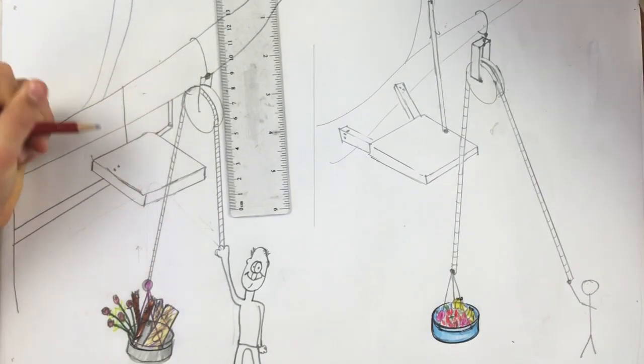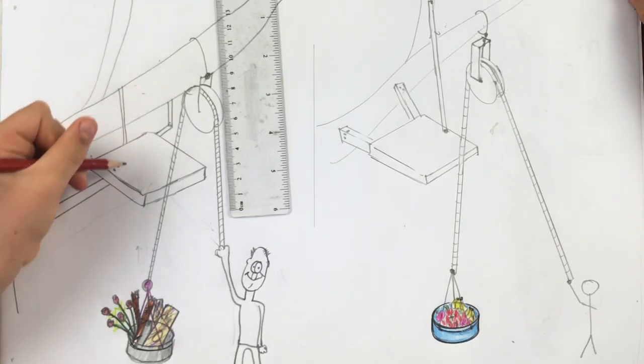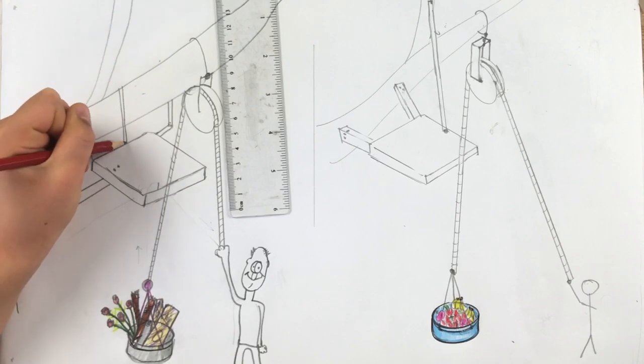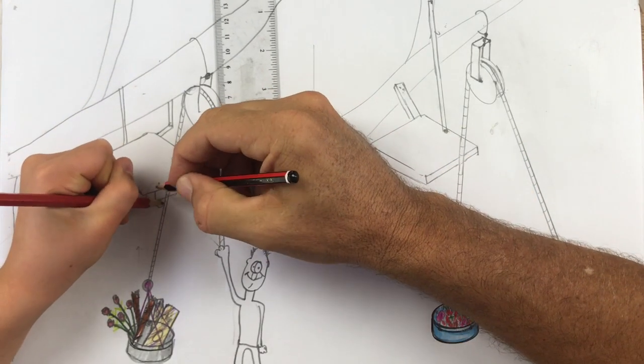I'm going to draw a rope there. Yeah. Holding it. And then there's a bit of a nail sticking up there and the rope wraps all the way around the bottom and hangs up on the rope.